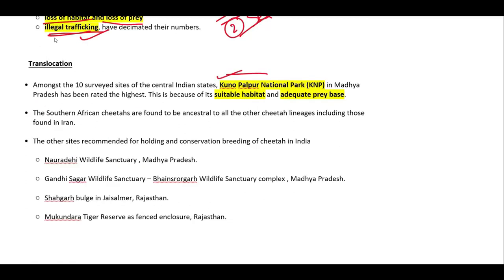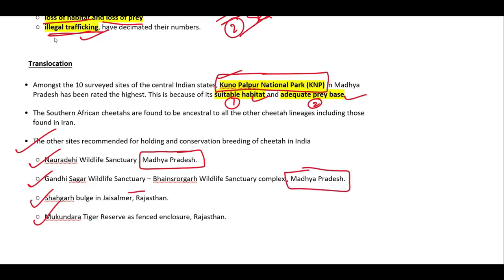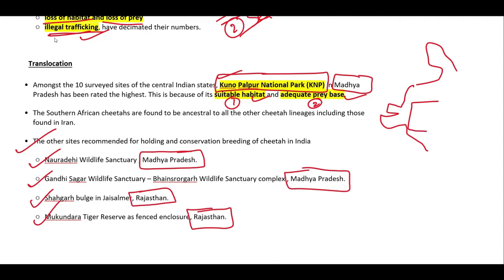The Government of India has identified Kuno Palpur National Park as one of the sites for relocation, due to suitable habitat and an adequate prey base. Other conservation breeding sites recommended include Nauradehi Wildlife Sanctuary and Gandhi Sagar Wildlife Sanctuary in Madhya Pradesh, and Shakar and Mukundara in Rajasthan. Kuno Palpur is also in Madhya Pradesh.